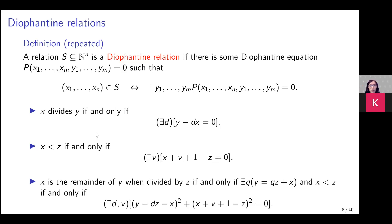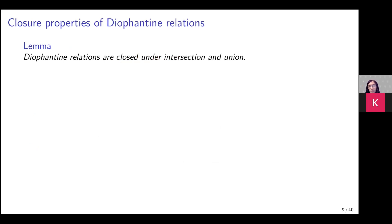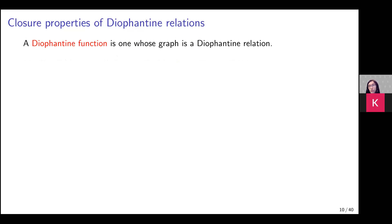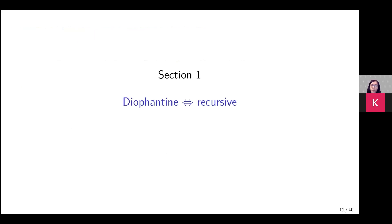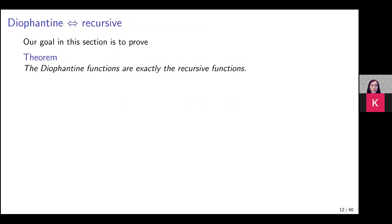We then proved some properties of Diophantine relations: they are closed under intersection and union. We talked about Diophantine functions — functions whose graph is a Diophantine relation — and we started looking at closure properties, showing they are closed under composition. Now that brings us to the main theorem I'm going to prove today: the Diophantine functions are exactly the recursive functions. A function on the natural numbers is Diophantine if and only if it is recursive.